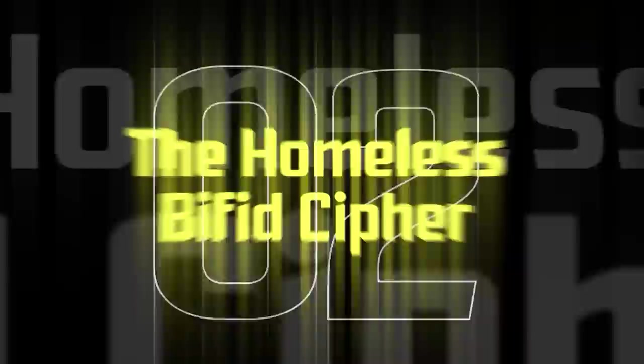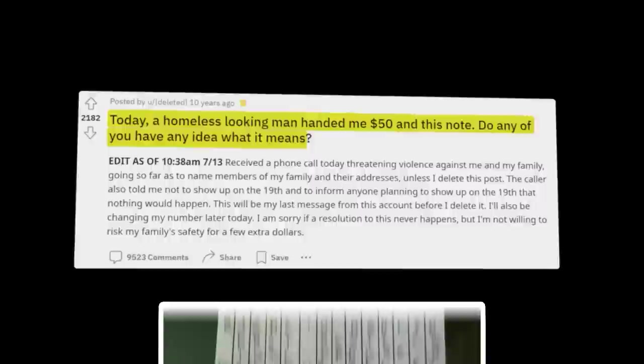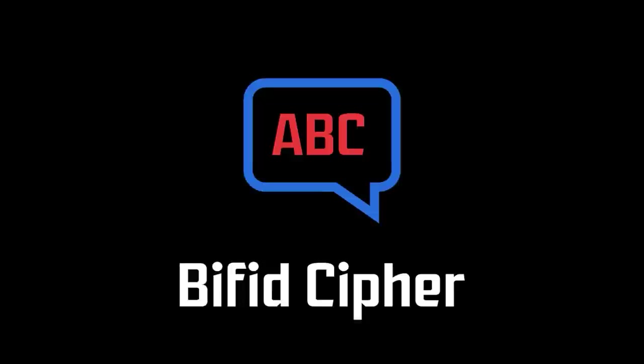The Homeless Bifid Cipher. Our second Reddit mystery is a classic from almost a decade ago, and is actually quite extensive, and has a chilling resolution. It all started when a Redditor posted the following to r slash askreddit. Today, a homeless looking man handed me $50 and this note. Do you have any idea of what it means? Internet sleuths quickly deduced that the note was a Bifid Cipher, which is essentially a means of hiding messages in a seemingly random jumble of letters. The Bifid Cipher is well known in cryptography, and was invented in 1901. But what cryptic message had supposedly been handed to the OP by a homeless man?